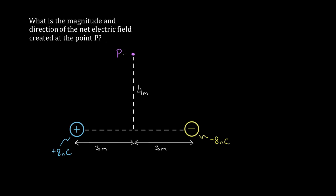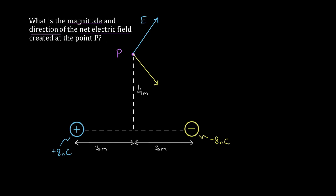This is a two-dimensional problem because if we want to find the magnitude and direction of the net electric field at this point, we approach it the same way initially. Each charge is gonna create a field up here that goes in a certain direction. This positive charge creates a field that goes radially away from it at point P. I'll call this the blue E because it's created by the blue positive charge. And this negative charge creates its own electric field that goes radially into the negative. I'll call this the yellow E because it's created by the yellow charge.